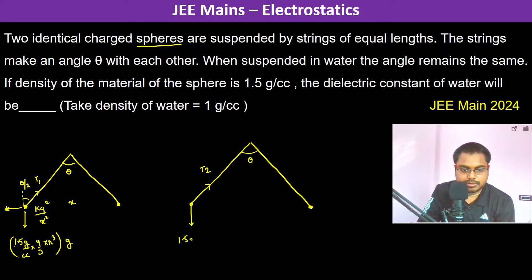This is T1, this is T2. Here it's again 1.5 grams per cc into 4 by 3 pi r cubed G, but there is buoyant thrust also, which is 1 gram per cc into 4 by 3 pi r cubed into G.